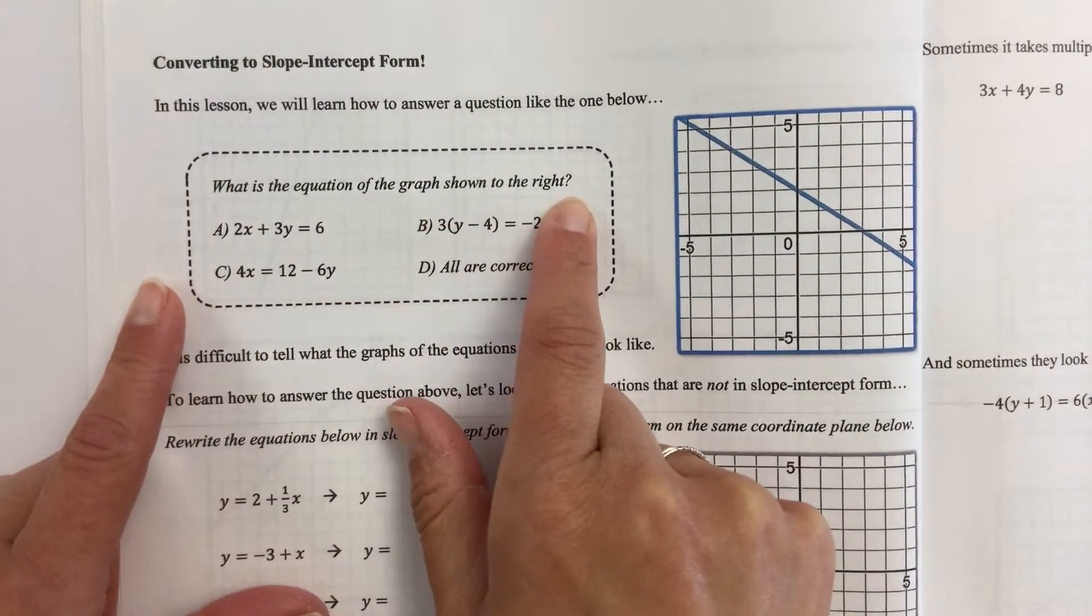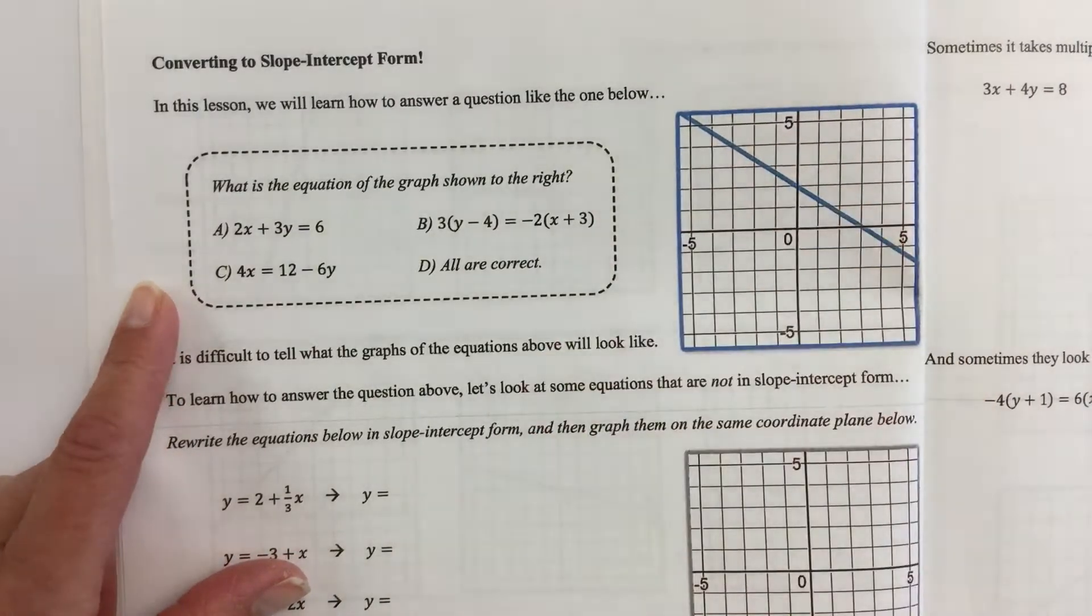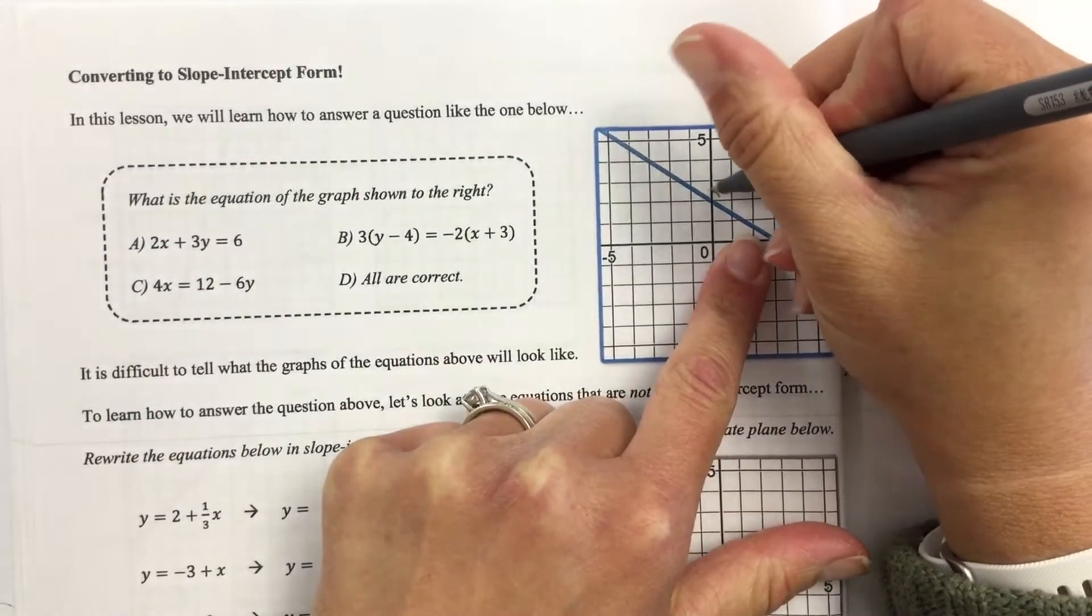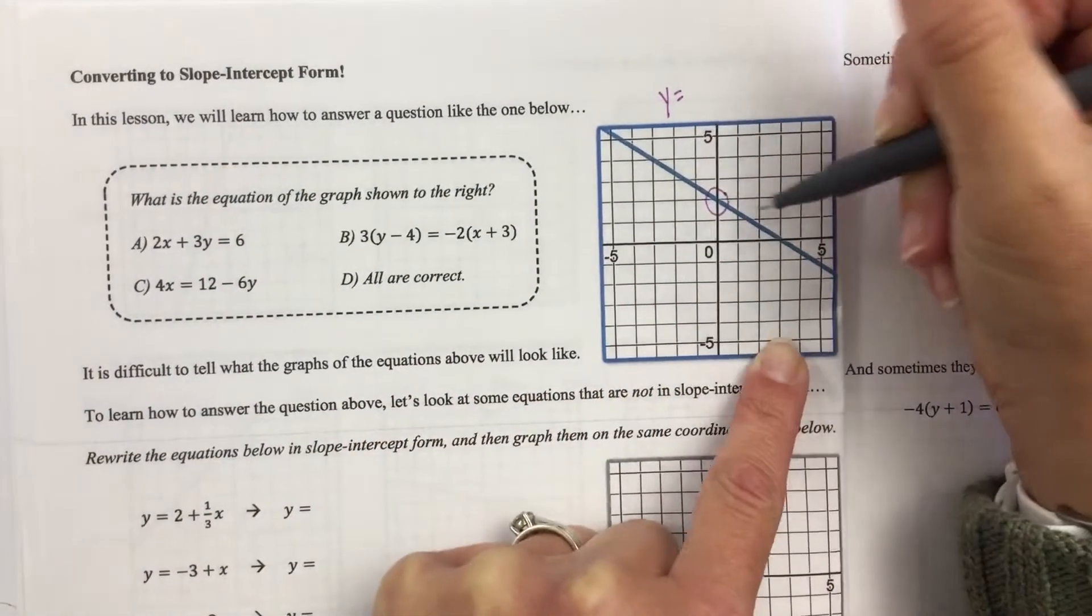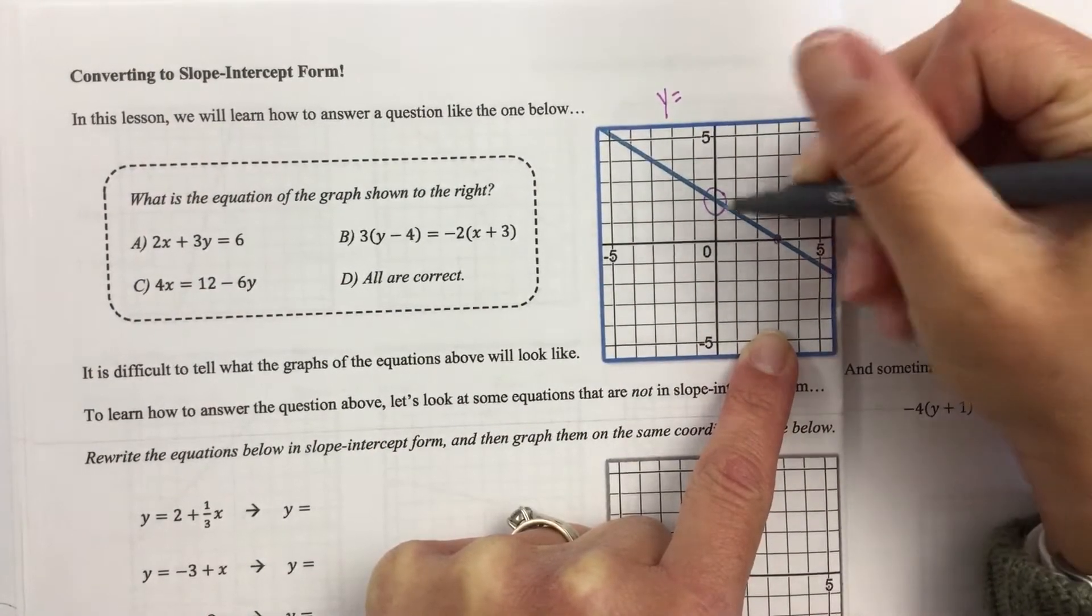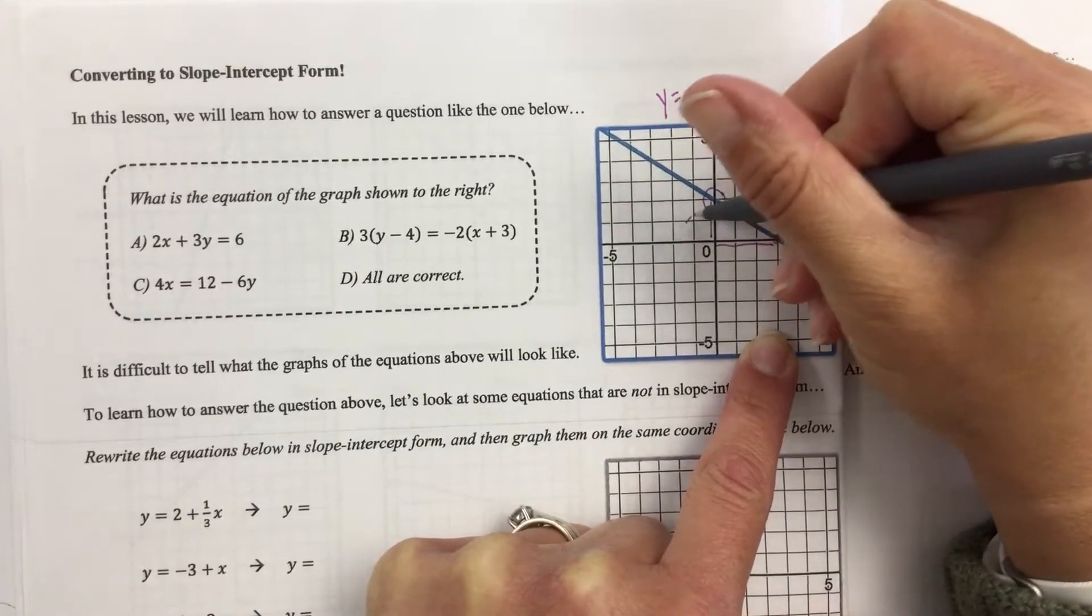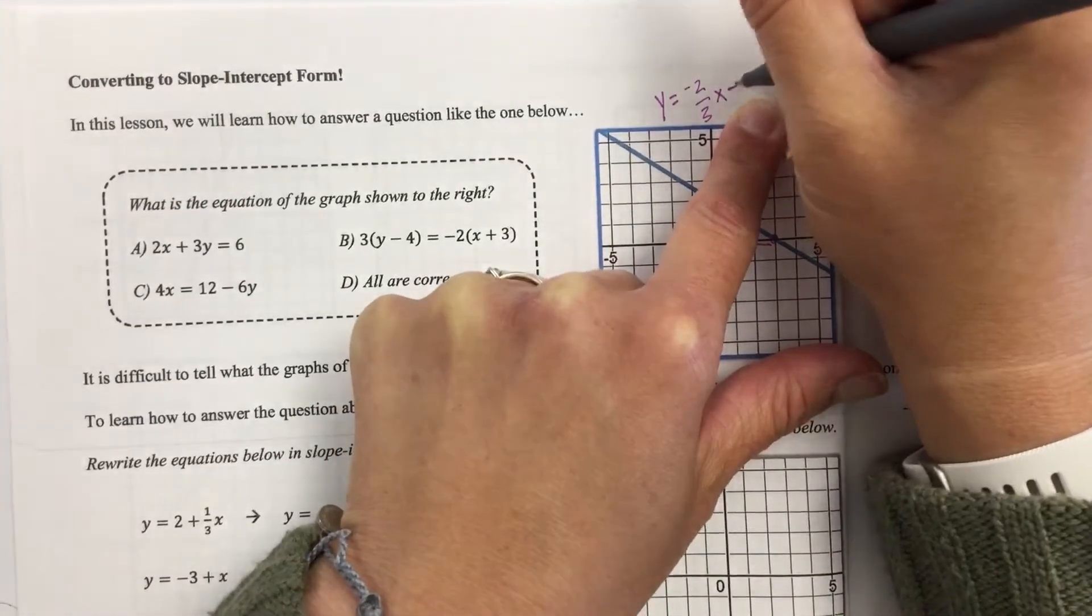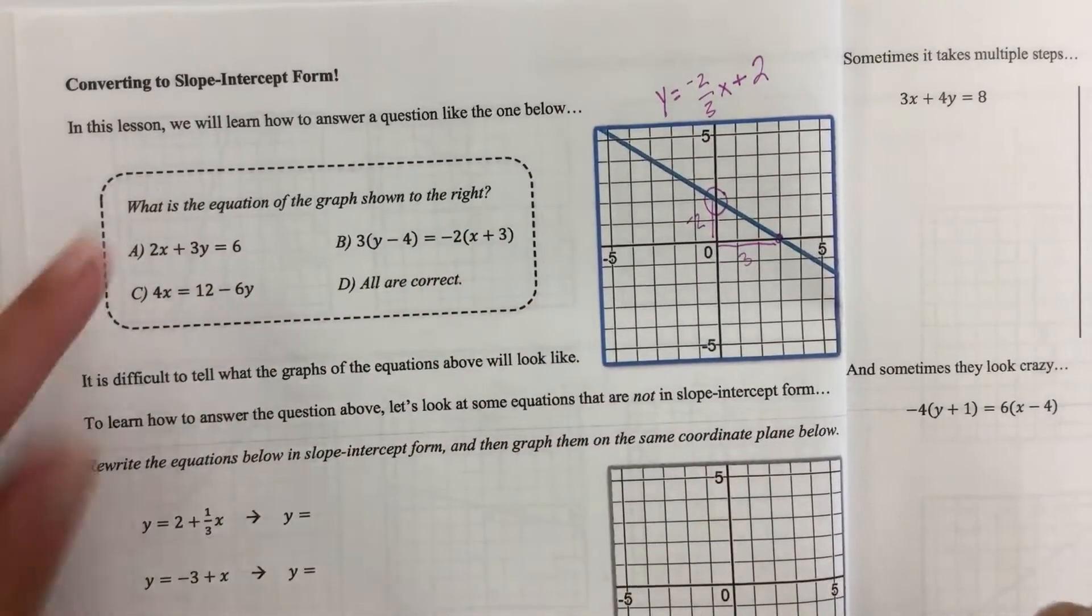So it says, what is the equation of the graph shown at the right? Well, usually when we have a graph, when we take the information from the graph, we write that equation in slope-intercept form. For example, if I were looking at this, my y-intercept would be 2. And then my slope, let's see where my next spot would be, this would be a down 2, right 3. So negative 2/3. So my equation, so we know how to do this, but it doesn't match any of the given equations.